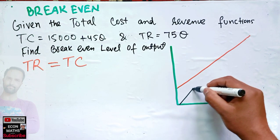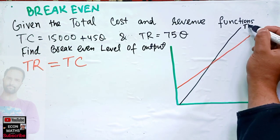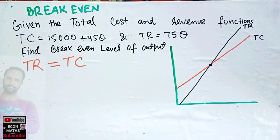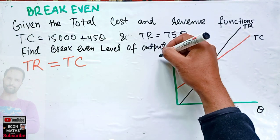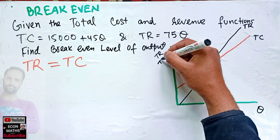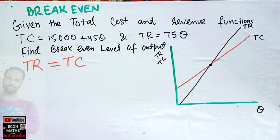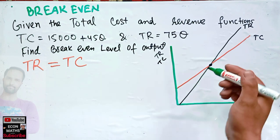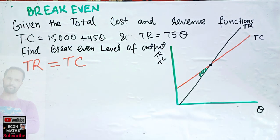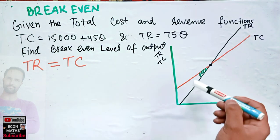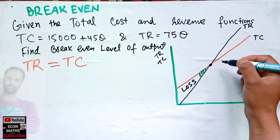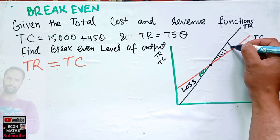This is the total revenue function, this is the total cost function. The point where these two intersect gives us the break-even level of output. We have output on this axis and total revenue and total cost on this axis. Points to the left of break-even denote costs are greater than revenue, which shows loss. Points above this denote profit.